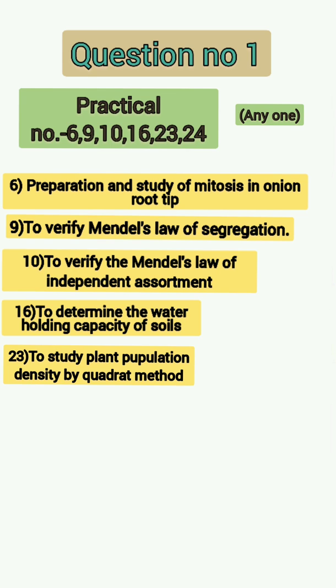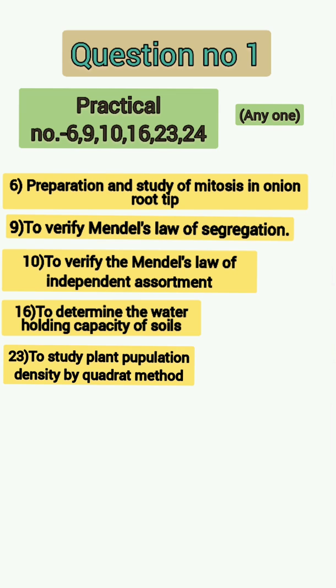Practical 23 is to study plant population density by the quadrat method. Practical 24 is to study plant population frequency by the quadrat method.